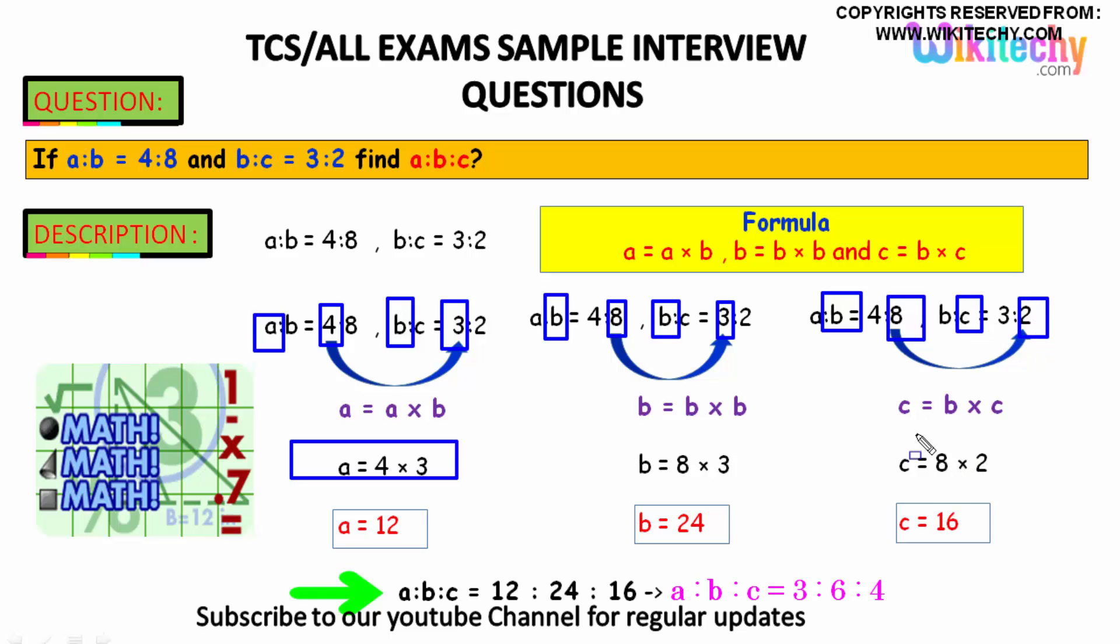C is equal to b times c. B is 8 here and C is 2 here, 8 into 2, so C is equal to 16. So the ratio is 12 is to 24 is to 16. The value is A is to B is to C is 3 is to 6 is to 4. The answer is 3, 6, 4.